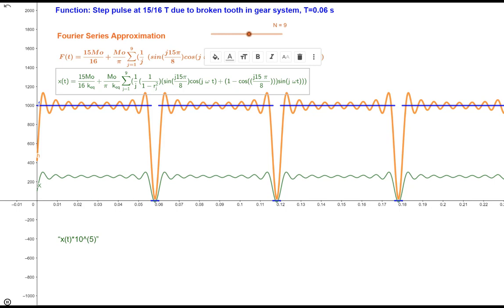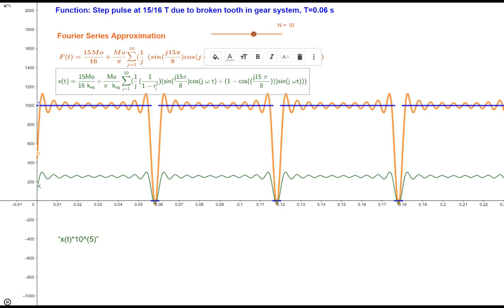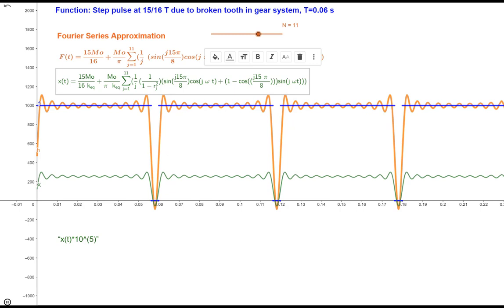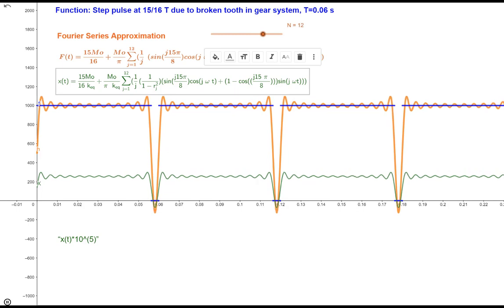We just have a different value for the constant term and the value for the equivalent constant of the spring. We have to divide that and the magnification factor as well. So that's how the response looks like.